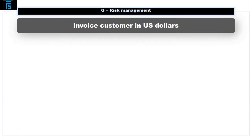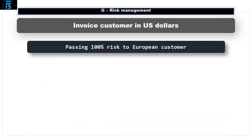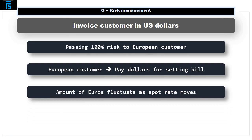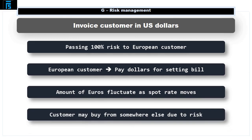Firstly, as an American exporter we could invoice customers in US dollars — we therefore won't be exposed to any foreign exchange. Unfortunately, all you are doing here is passing the risk 100% on to our customer. Our European customer will have to pay a certain number of dollars when they settle their bill, and as the spot rate moves, the amount of euros this will cost them will fluctuate. The customer may choose to buy from elsewhere if we impose this risk upon them.